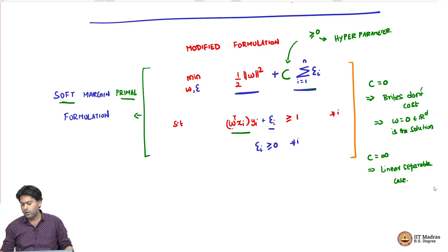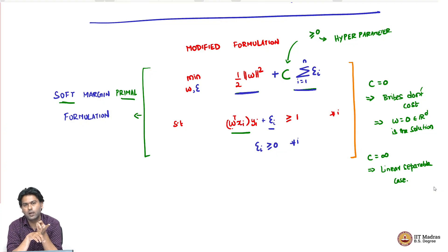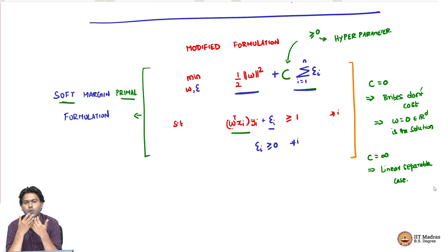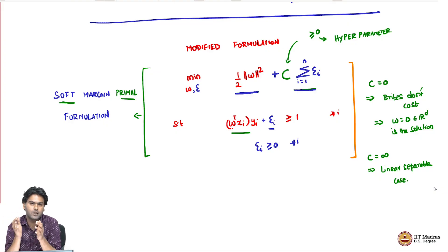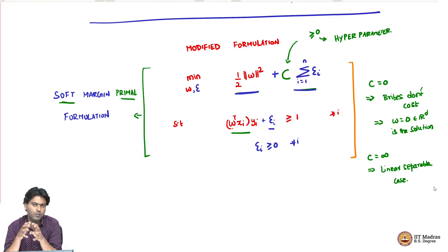Now we have a modified primal formulation that can potentially handle outliers. The earlier formulation had a great benefit in the dual: it was kernelizable and had simple constraints alpha greater than or equal to zero. But here we have added extra slack variables epsilon_i and are searching over both W and epsilon_i. It is not immediately obvious how the dual problem will look. We need to convert this primal problem into a dual and check whether we have retained kernelizability and simpler constraints — if not, this is a bad formulation. The only way to know is to actually derive the dual.